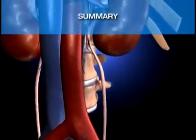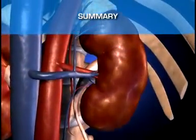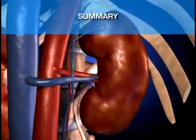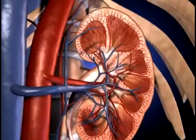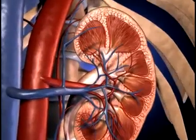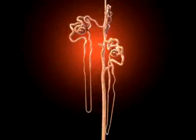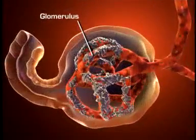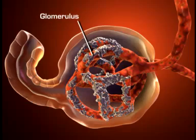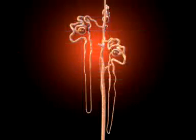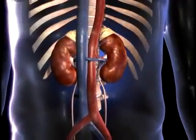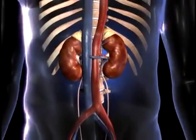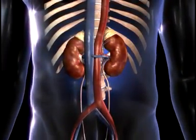The kidneys perform an excretory function by filtering the blood and then selectively reabsorbing those materials that are needed to maintain a stable internal environment. The nephron is the functional unit of the kidney and is composed of a glomerulus, which filters the blood, and a tubular component, where necessary substances are reabsorbed into the bloodstream and unneeded materials are secreted into the tubular filtrate for elimination in urine.